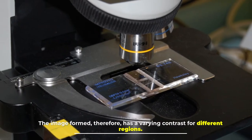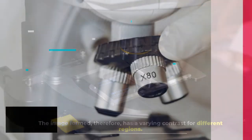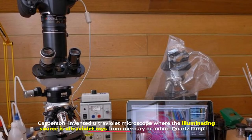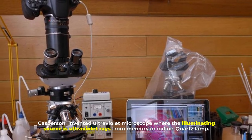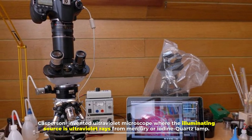Number three: ultraviolet microscope. Caspersson invented ultraviolet microscope where the illuminating source is ultraviolet rays from mercury or iodine quartz lamp. Image is captured on photographic film.